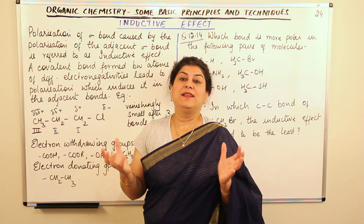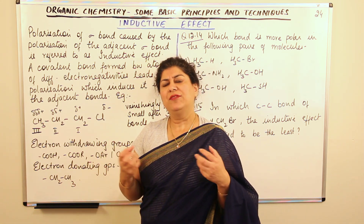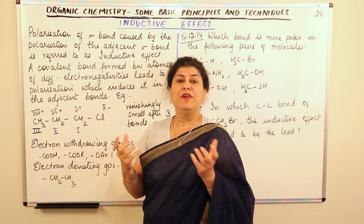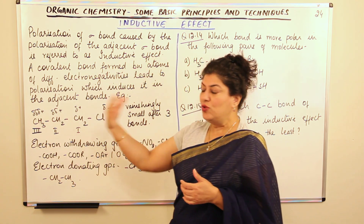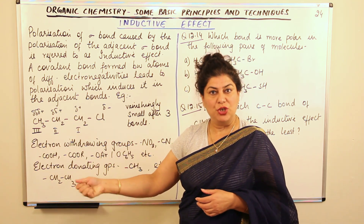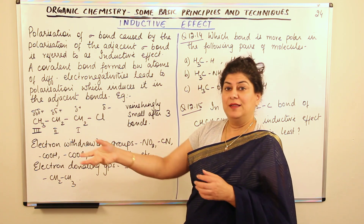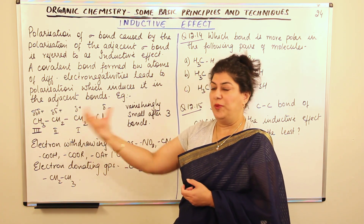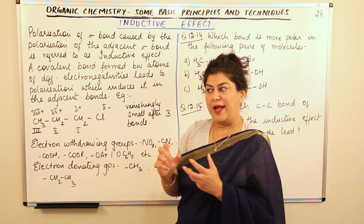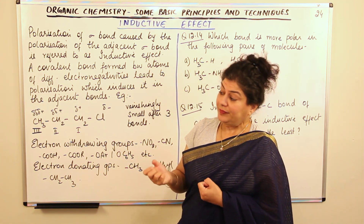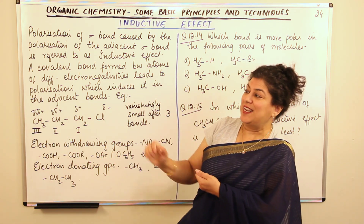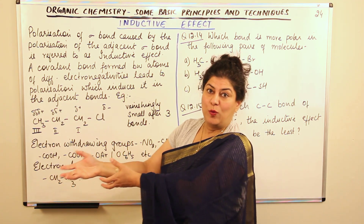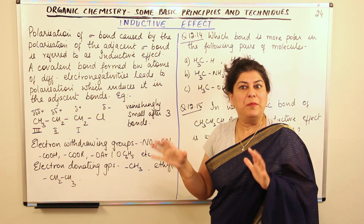These two carbon atoms have the same electronegativity — the same tendency to pull electrons towards themselves. Therefore the bond formed between them is a balanced bond. It is like a tug of war: if both opponents have the same strength, the rope neither moves one way nor the other. But if one opponent is stronger, they pull the rope towards themselves and an imbalance is created.